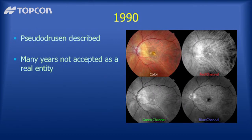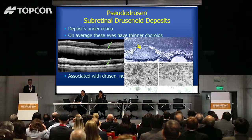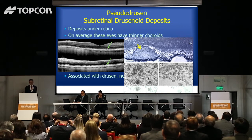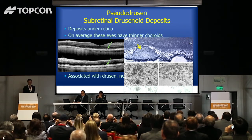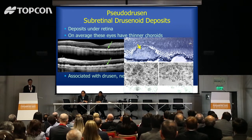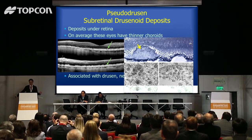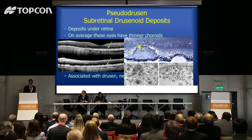One thing ignored was pseudodrusen, first described in 1990. They're best seen with blue light. They weren't really accepted as a real entity — thought to be an appearance arising out of the choroid. But later we showed they're really the result of deposition of material underneath the retina. Working with Christine Curcio, we characterized this material. It's something like what's found in drusen. In drusen there may be more cholesterol esters, while in subretinal drusenoid deposits there's more free cholesterol, but many of the same proteins are found in both.